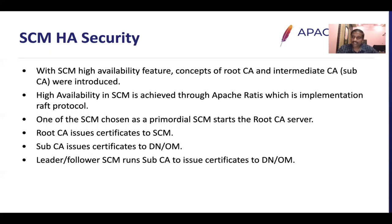Let's understand SCM-HA security. In a single SCM, there is a root CA that issues certificates to Ozone Managers and Data Nodes. With SCM-HA, there will be three nodes — one leader and two followers. To avoid a single point of failure, we introduced a concept of root CA and intermediate CA. The root CA runs on the primordial SCM, which generates a self-signed certificate, starts the root CA, and issues signed certificates to other SCMs in the cluster. The sub-CAs use the certificate received from the root CA to start their sub-certificate authority server and issue certificates to Ozone Managers and Data Nodes.